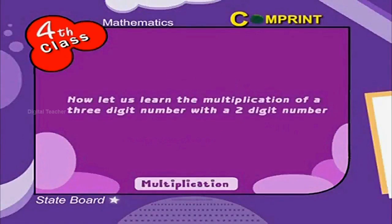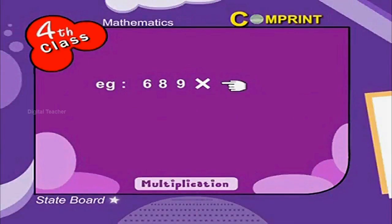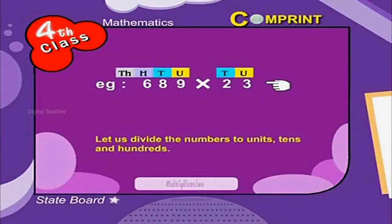Now let us learn the multiplication of a 3-digit number with a 2-digit number. Look at the example: 689 into 23. Let us divide the numbers into units, tens, and hundreds.